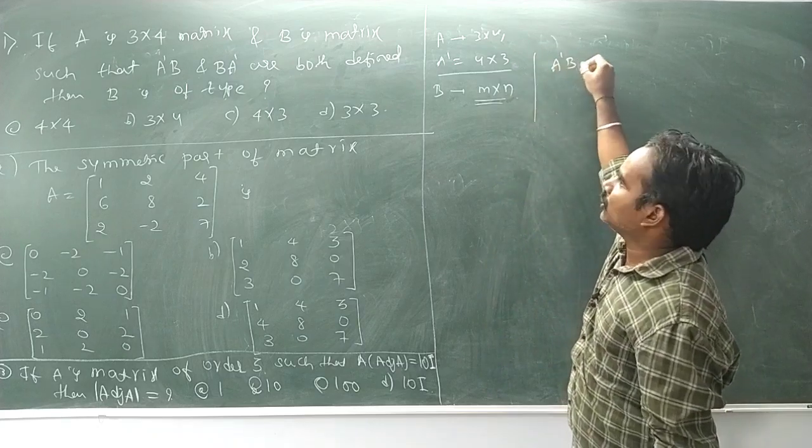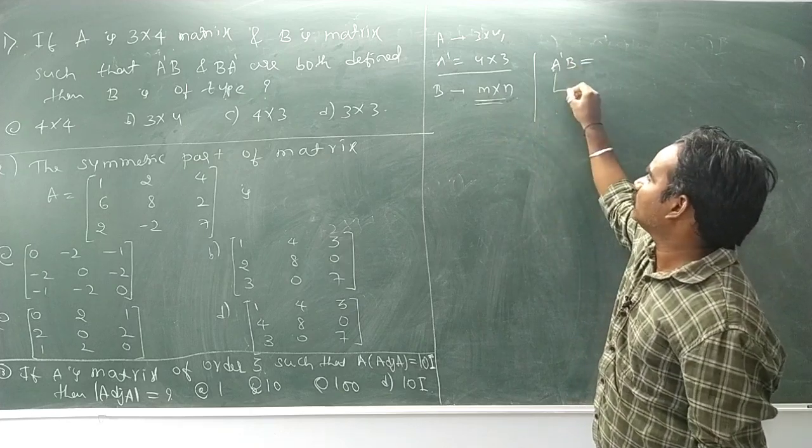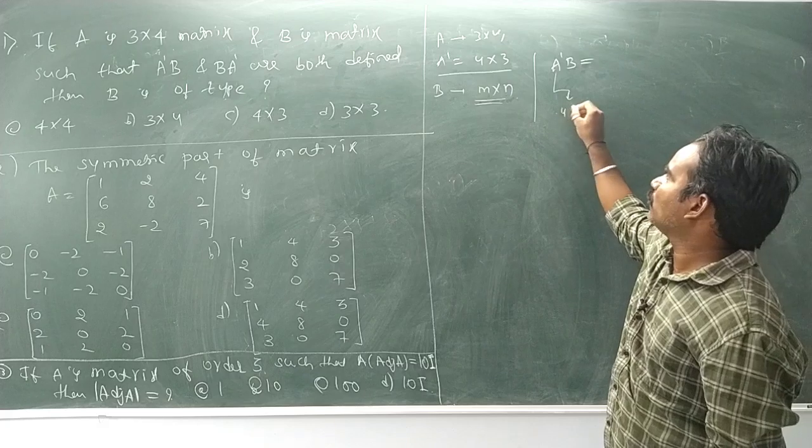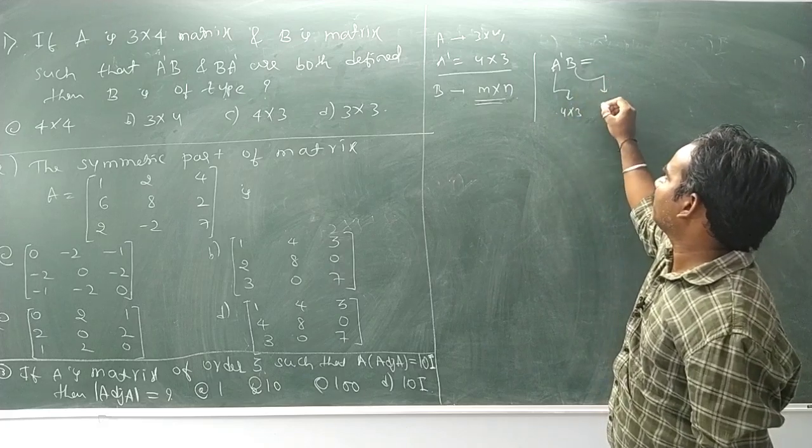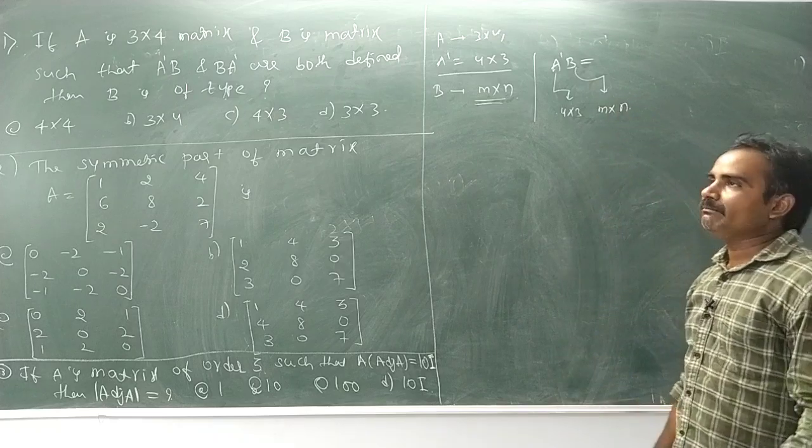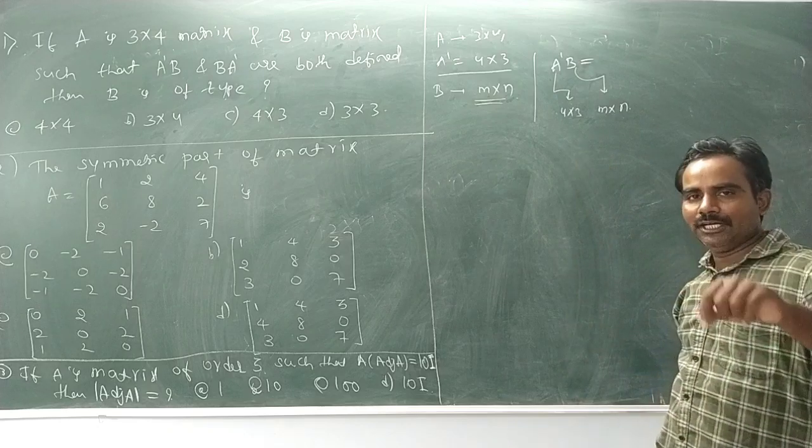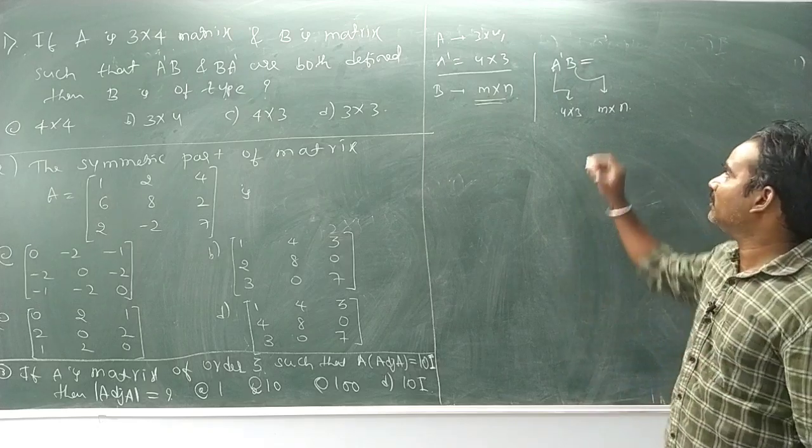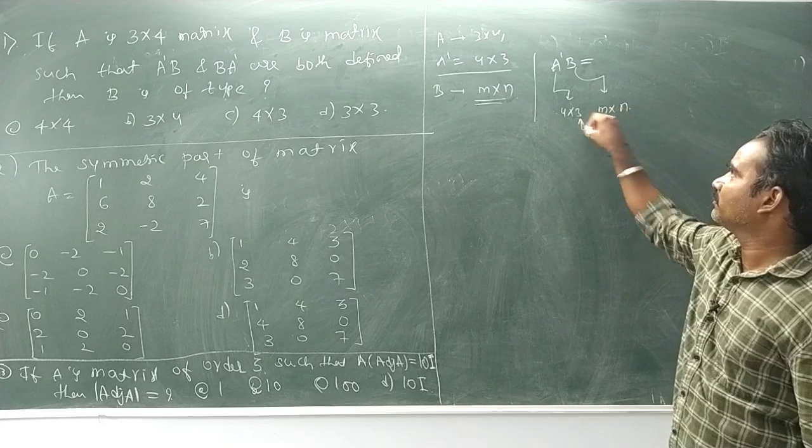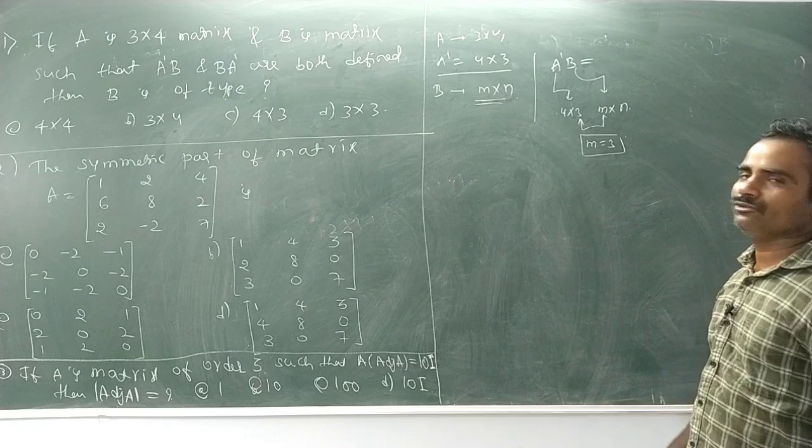A'B is defined. A' is 4 by 3, and if it's defined with M by N matrix, then for multiplication the columns must equal rows, so 3 equals M. Therefore M equals 3.